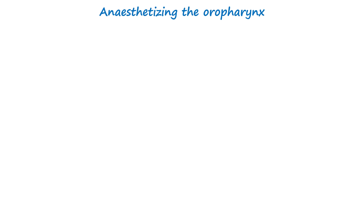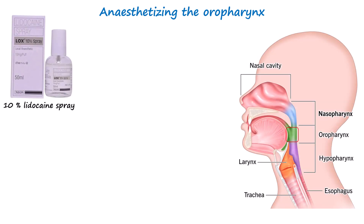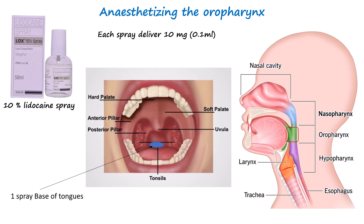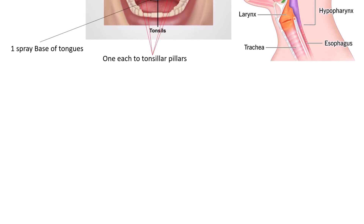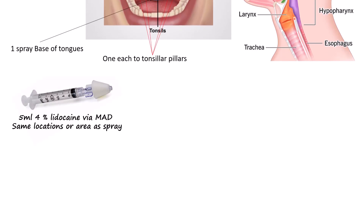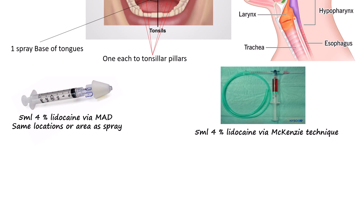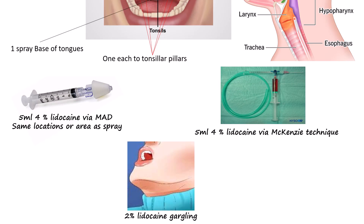For topicalizing the oropharynx, we used 10% lidocaine spray. Each actuation delivers about 10 mg of lidocaine, roughly 0.1 ml. One spray is applied to the base of the tongue, then one spray goes into each tonsillar pillar — in total, around 4 to 6 sprays. This numbs the tongue, soft palate, and oropharynx where the gag reflex is strongest. A mucosal atomizer with 5 ml of 4% lidocaine can also be used, as can the McKinsey technique with the same volume. Another option is gargling viscous 2% lidocaine for 1 to 2 minutes.